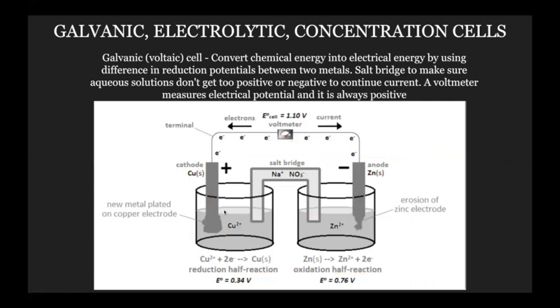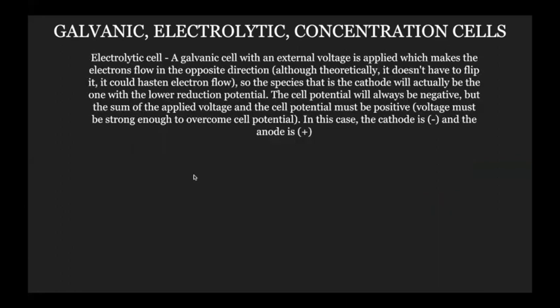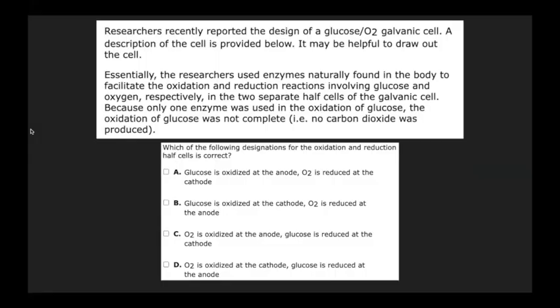One key thing about galvanic cells: the redox reaction that occurs is spontaneous. Whichever metal has a higher reduction potential gets reduced, and the one with a lower reduction potential gets oxidized. With an electrolytic cell it's kind of reversed — whichever has the higher reduction potential is actually going to be the one that gets oxidized, which is counterintuitive. This is achieved by applying an external voltage.